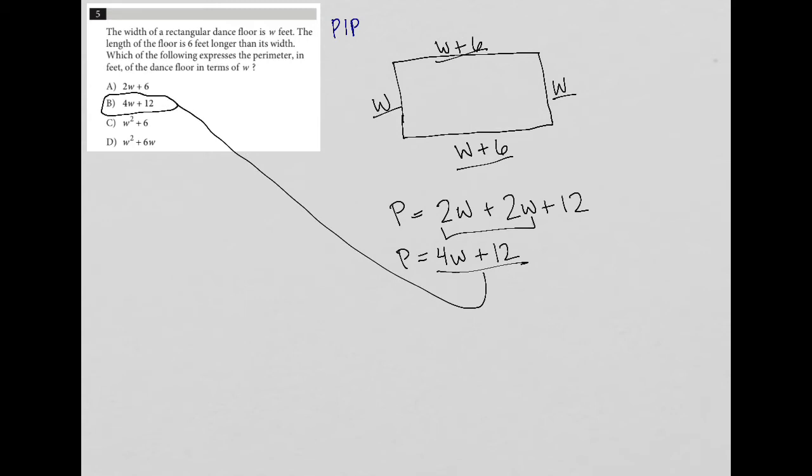Another way to solve this question is to use a strategy plug in your own number. And the way that you would know that you could use this strategy is because of all of the W's in the answer choices. So the way this strategy works is we just make up a number for W.